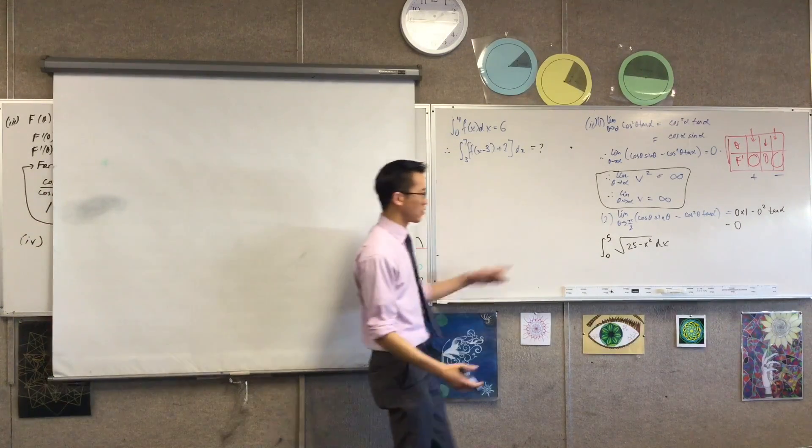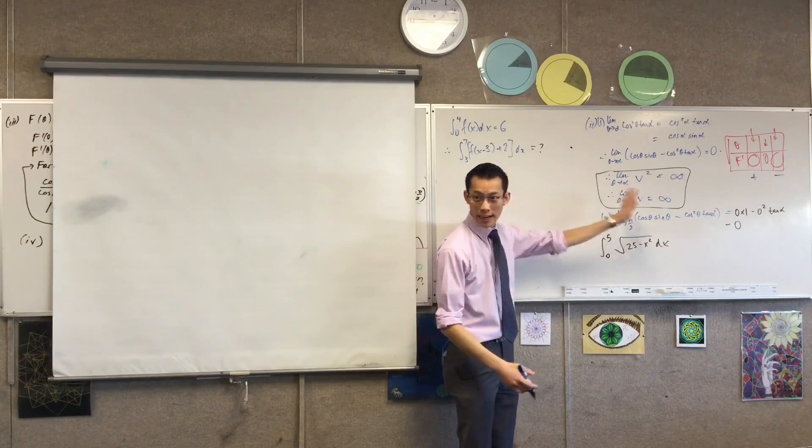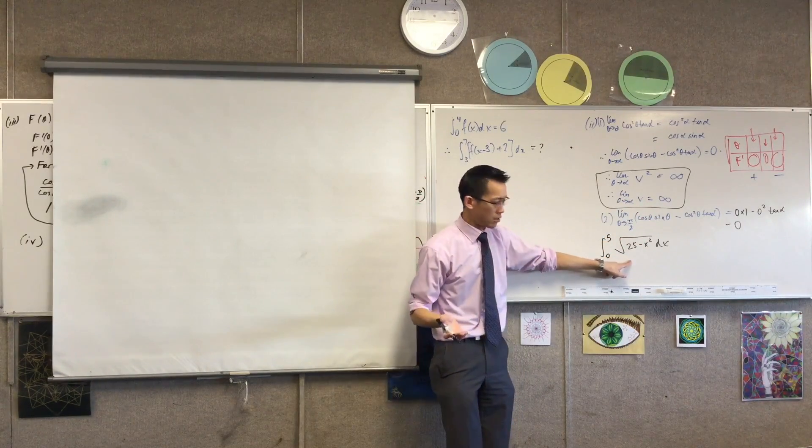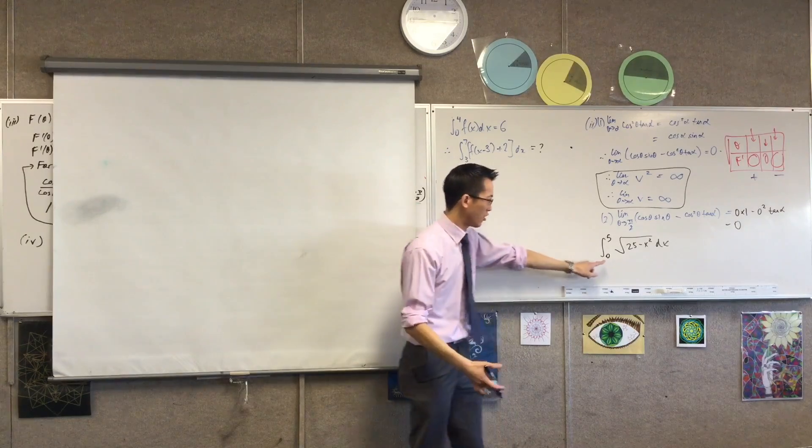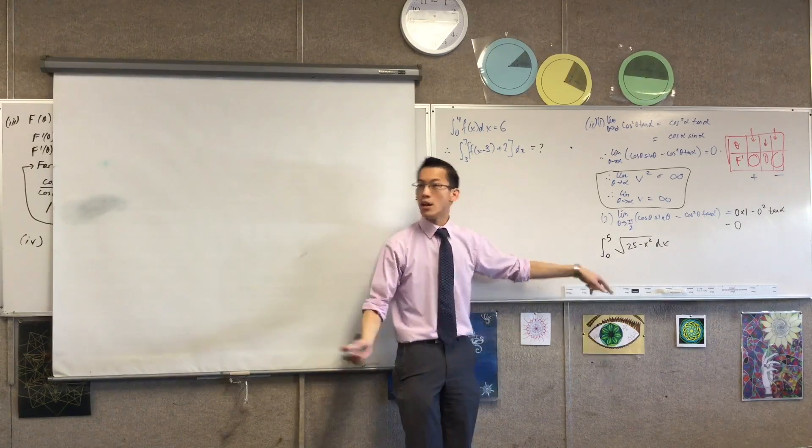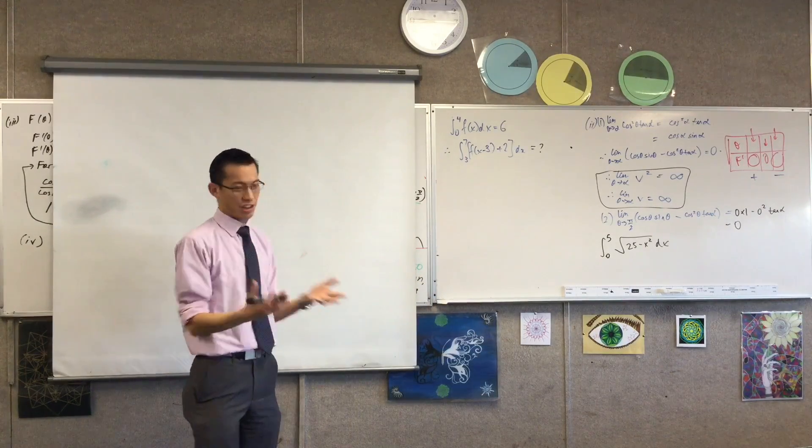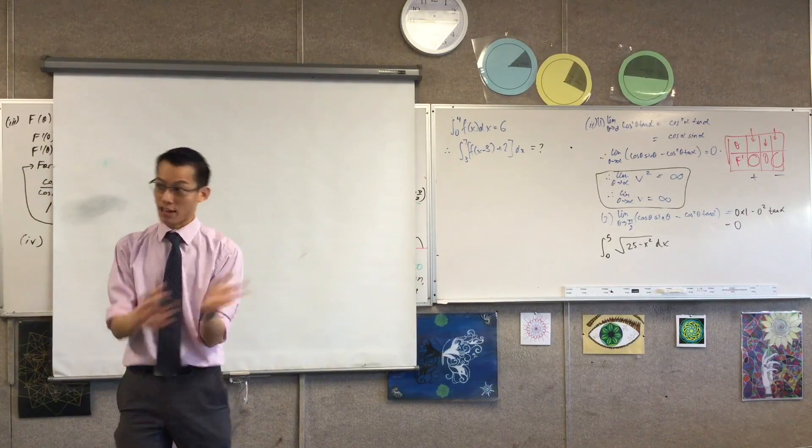It's a quadrant, right? It's a quadrant of a circle. So it's only on the right-hand side, so you say, oh, okay, pi r squared would be 25 pi, and I actually only want a quarter of the circle, so 25 pi divided by 4, right? So you think about that through the lens of area rather than calculus, actually solving that question.